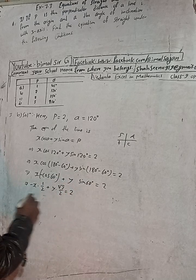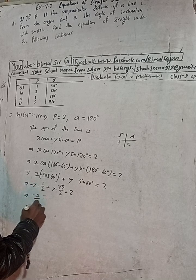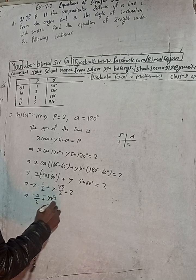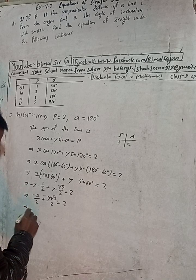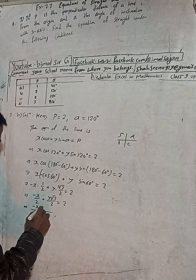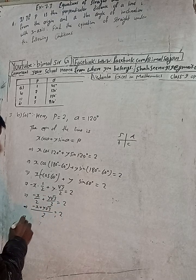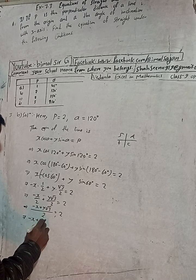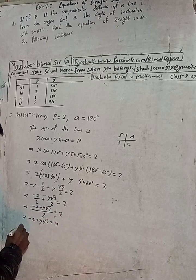This gives −x/2 + y√3/2 = 2. Multiplying through by 2 (LCM = 2): −x + y√3 = 4. This can be written as −x + y√3 = 4.